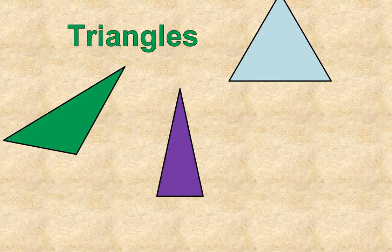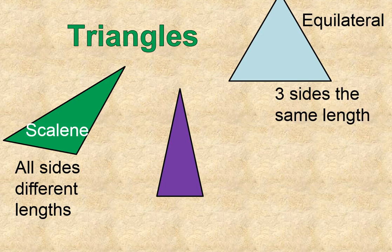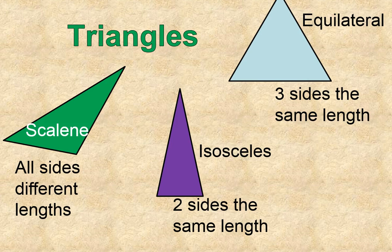There's one other way to classify triangles — by their side lengths. The green triangle has all three side lengths different, so we call that a scalene triangle. An equilateral triangle has all three side lengths the same. An isosceles triangle — the hardest one to spell — has two side lengths that are the same. In the purple triangle, the two sides going up are congruent, meaning they have equal length, while the bottom is shorter.